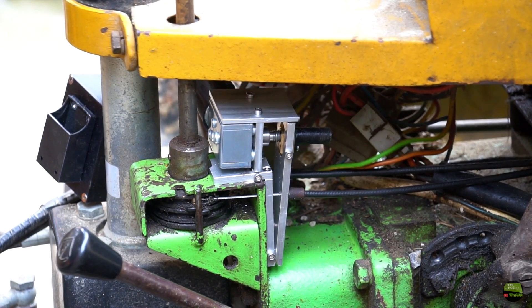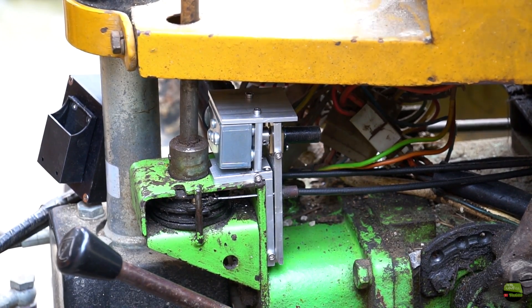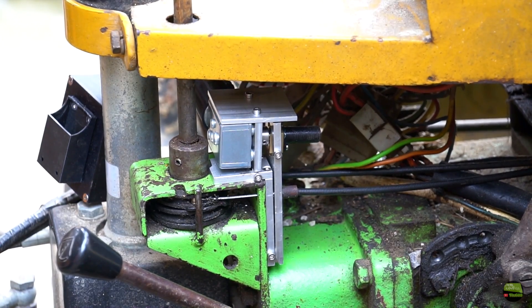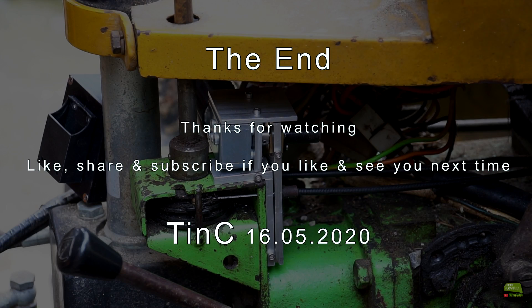That's it about that project. There are a lot of ways to make RC throttle control. Lot of people use electrical actuators to do that, but they are pretty big and need some free space. Hope I gave you some ideas with my solution. Thanks for watching, like, share, and subscribe if you like, and see you next time.